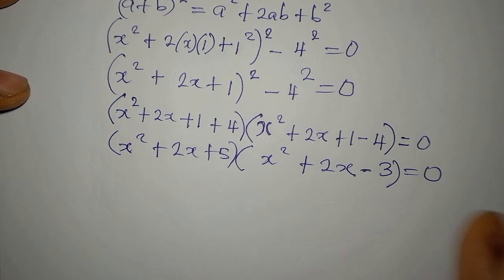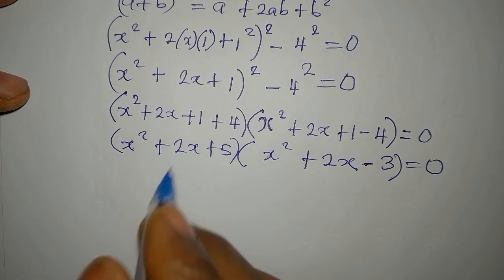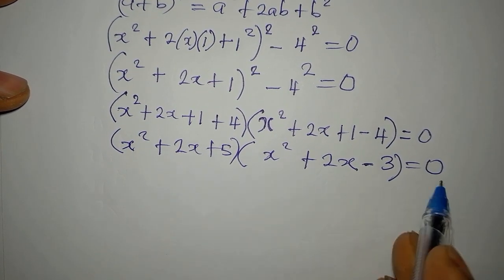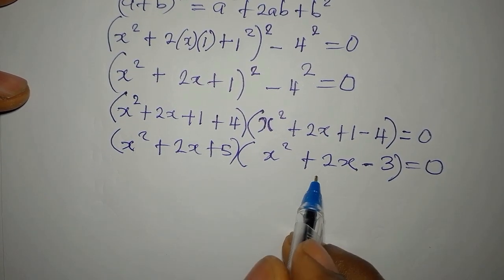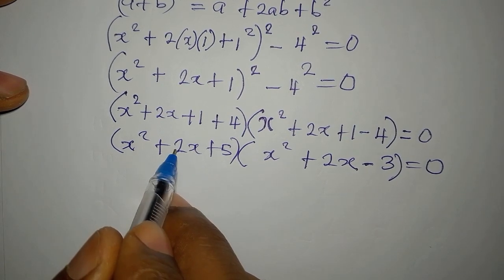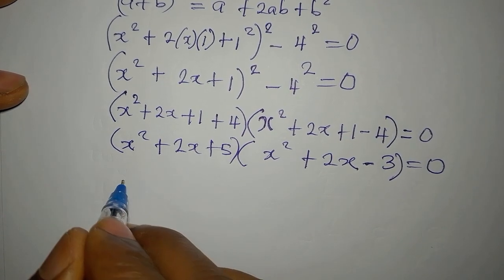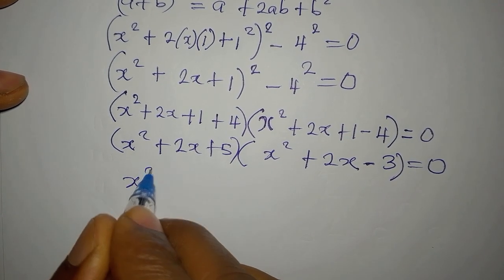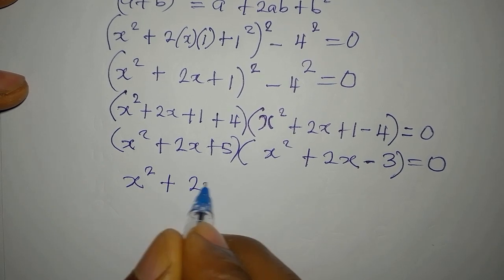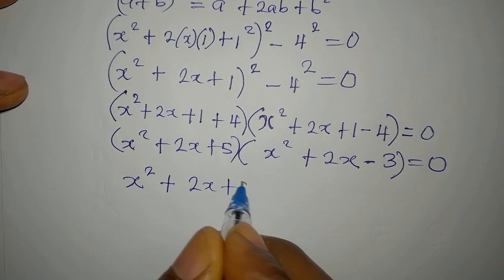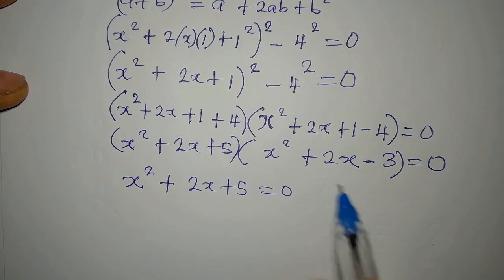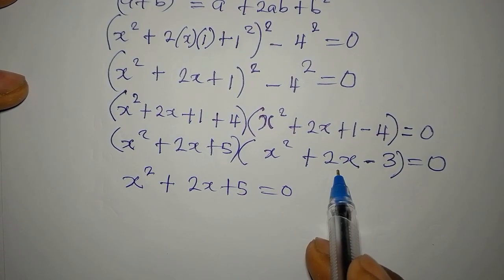We apply the zero product rule, so it's either the first factor equals 0 or the second equals 0. I'm going to work with the first one first: x squared plus 2x plus 5 equals 0, and I'll come back to the second.